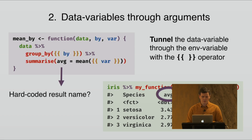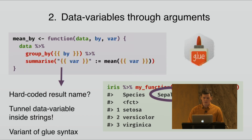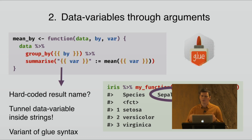One other issue is that we have hard-coded the result name. We've given it the name `avg` for average, but maybe you want something that changes with the input. A very new feature in rlang — just added last week — is that you can now use glue strings on the left-hand side of the walrus operator. The syntax is a little different from the glue package because you have to use double curly, which allows you to tunnel a data variable inside the string, and you get a more relevant result name in the resulting data frame.